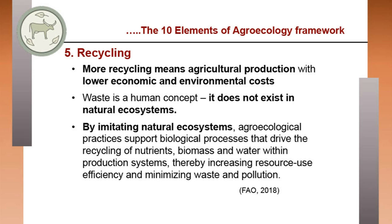The fifth element is recycling. More recycling means agricultural production with lower economic and environmental costs. Nothing is waste in this world — waste is a human concept that does not exist in natural ecosystems. By imitating natural ecosystems, agroecological practices support biological processes that drive recycling of nutrients, biomass and water within production systems, increasing resource use efficiency and minimizing waste and pollution. Just as humans made the aeroplane by observing birds, we can learn from nature and apply it to agroecosystems.